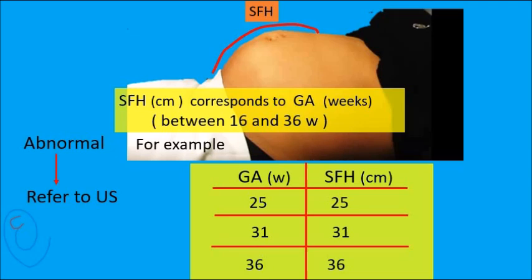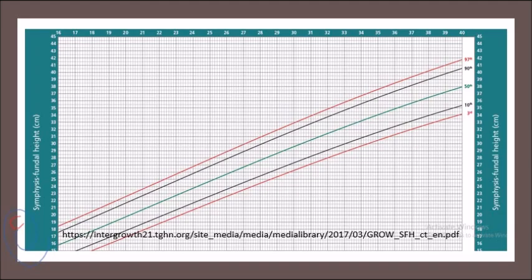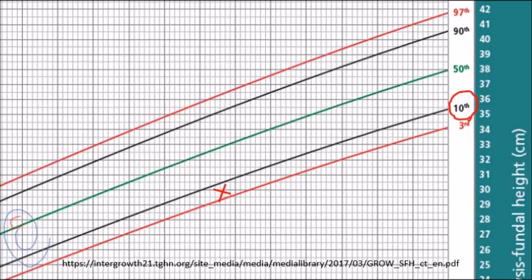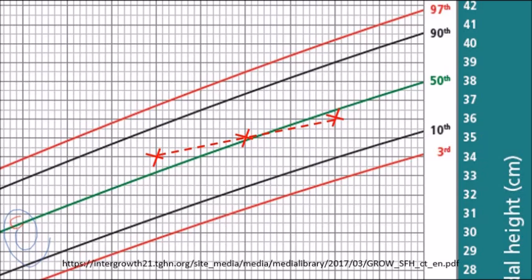The first method uses percentile charts. A small fetus is suspected if a single measurement is less than the 10th percentile, or serial measurements showing slower static growth in which the SFH line crosses centile lines.